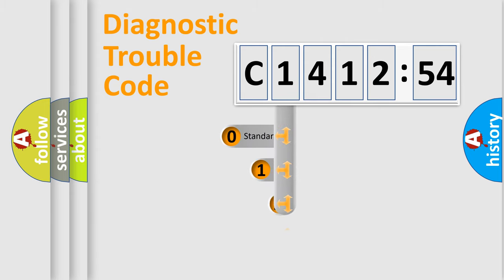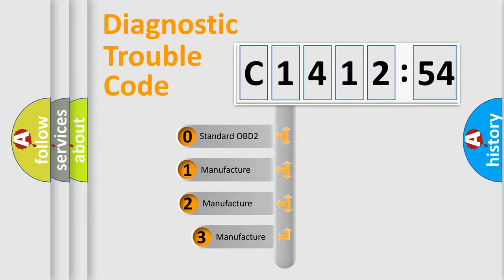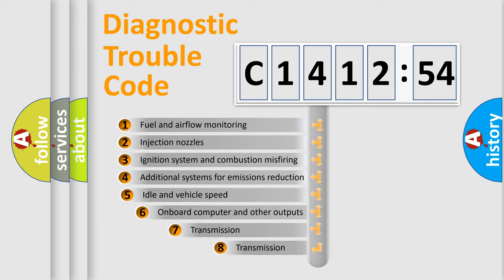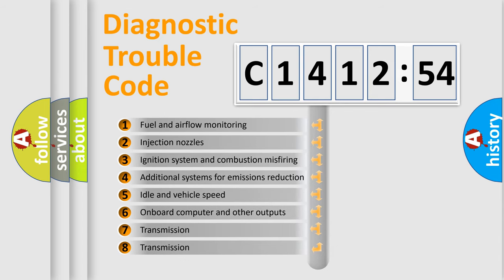Powertrain, Body, Chassis, Network. This distribution is defined in the first character code. If the second character is expressed as zero, it is a standardized error. In the case of numbers 1, 2, 3, it is a manufacturer-specific error.